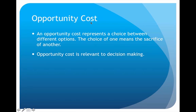Then we have the opportunity cost. An opportunity cost represents a choice between two different opportunities, where the choice of one means the sacrifice of another — in other words, we can't do two things at once. For example, if we own a building, we could use the building ourselves to make a product or conduct business, or we could simply rent the building out to another company. We can only do one or the other, and which one is going to make us the most money? That's an opportunity cost, and those are definitely relevant to decision making.